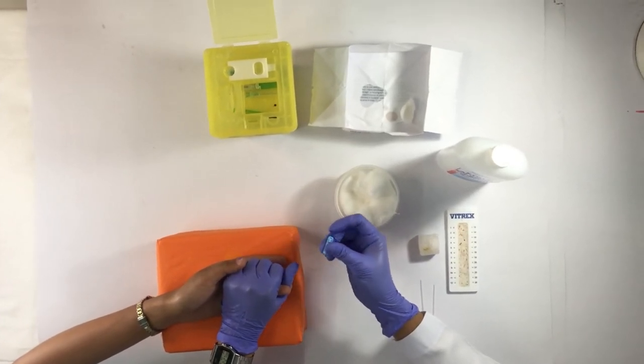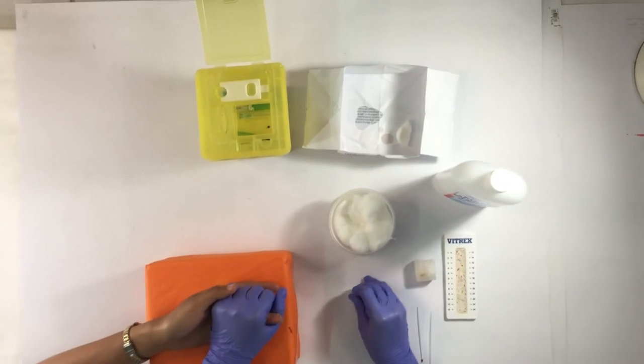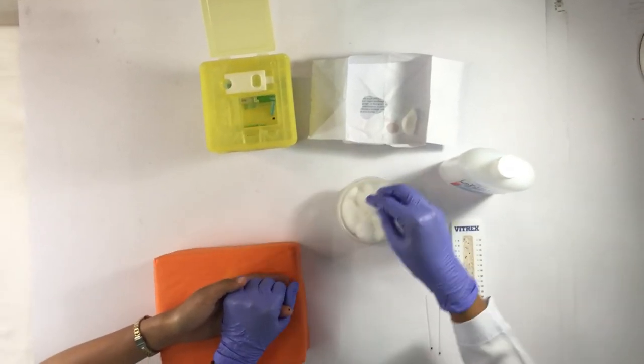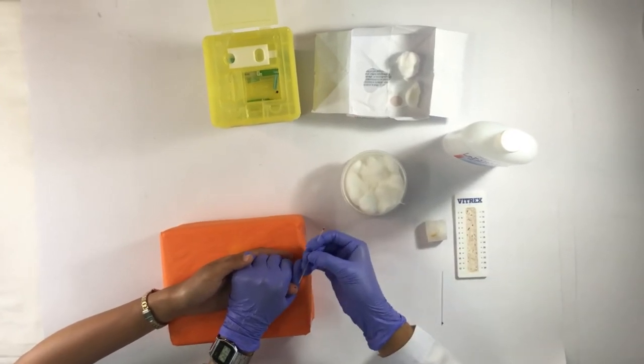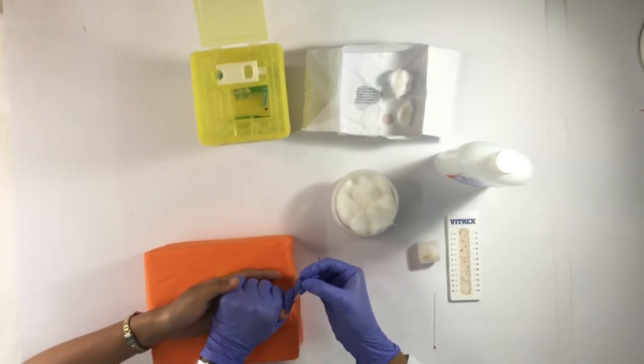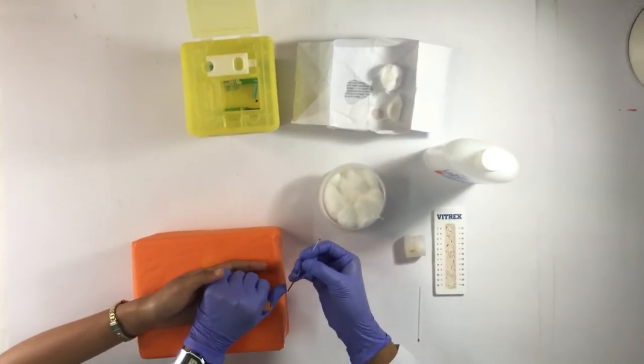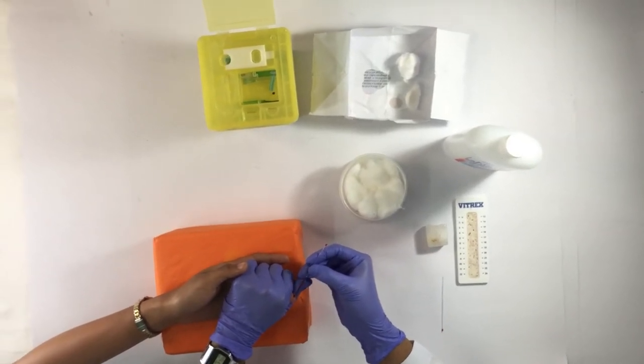Hold the finger of the patient and perform a quick, firm stab on the finger. Immediately discard the used lancet into the sharps container and wipe the first drop of blood using cotton. Make sure that the puncture site is perpendicular to the ridges of the finger to ensure that a ball of blood is generated for easy collection.